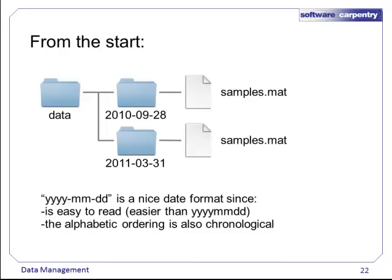A much better approach is to, from the start, add a chronological layer to our data. Structuring folder names in this way — year, month, day — ensures that they are always printed in chronological order. Also, scripts and Unix commands can all take advantage of the same number of levels.